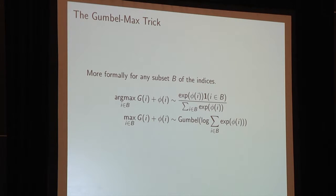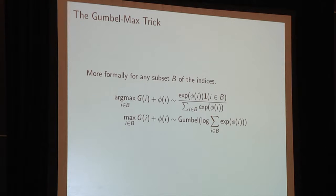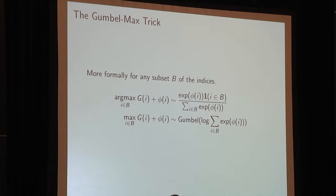More formally, if we look at any subset of the indices B, the argmax of this process is distributed by the Gibbs distribution restricted to that subset B, and the value at the max is distributed as a Gumbel with location log-sum-exp of phi for the indices in B.